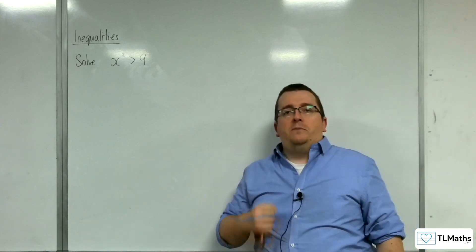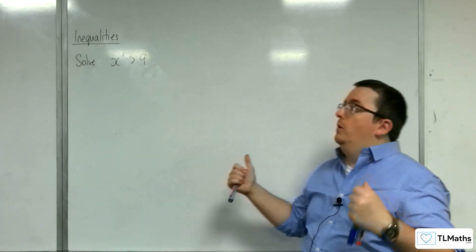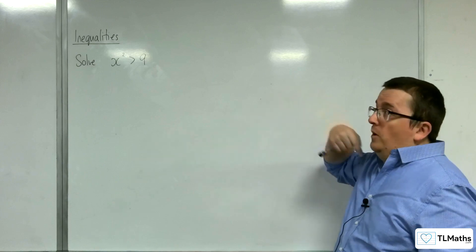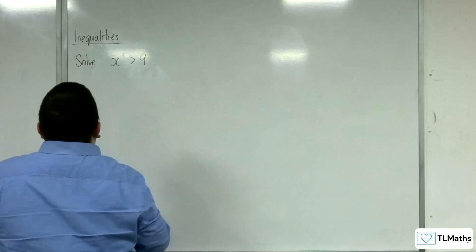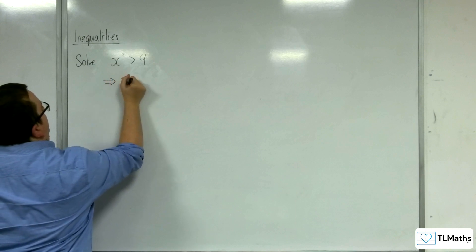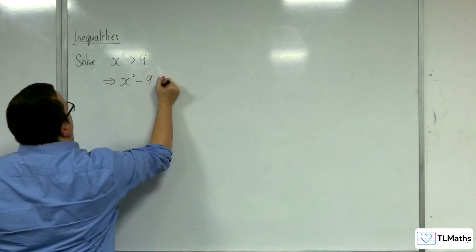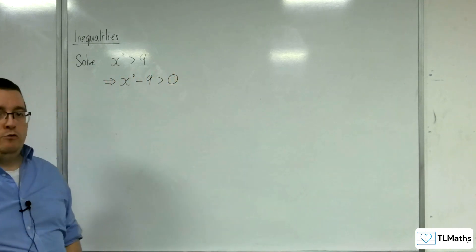Now the first thing you want to do is make sure you've got 0 on the right hand side. So I'm going to subtract 9 from both sides to get x squared minus 9 is greater than 0. That's the first step.